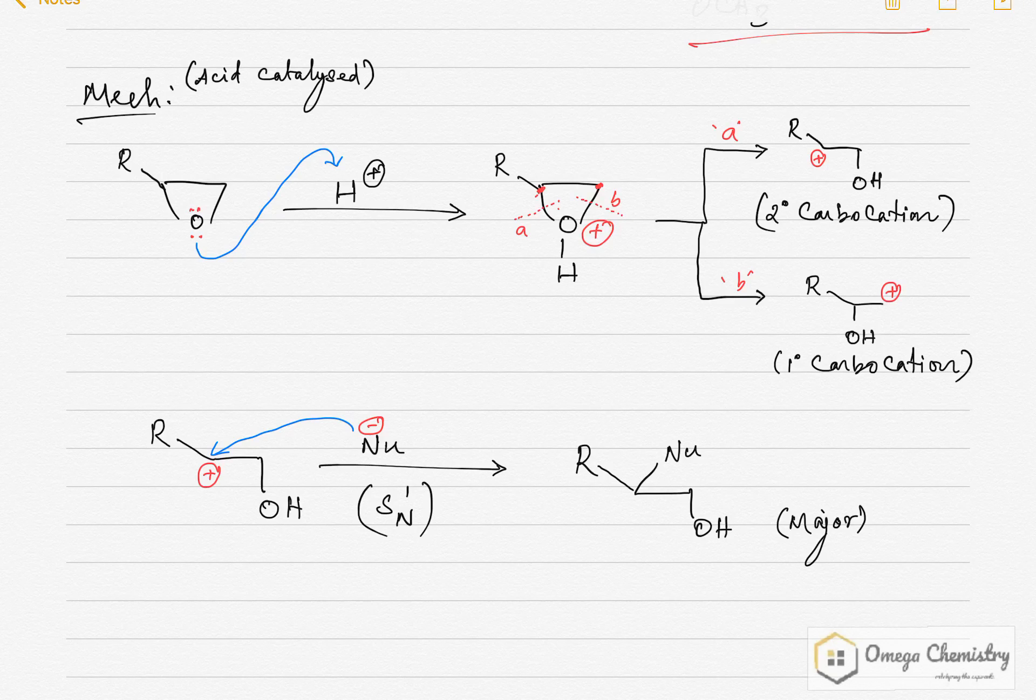If A type bond breakage happens, then it will lead to secondary carbocation. Whereas B type will give me primary carbocation. As the secondary carbocation is more stable than primary carbocation, the major product will result from these more stable secondary carbocation intermediates.